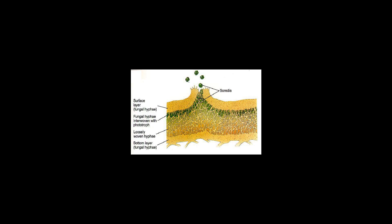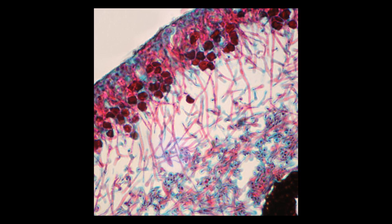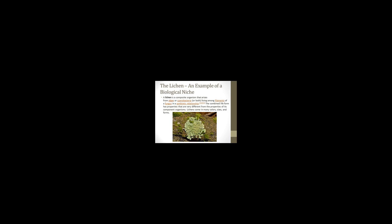The fungal partner protects the alga by retaining water, serving as a larger capture area for mineral nutrients and, in some cases, provides minerals obtained from the substrate. If a cyanobacterium is present as a primary partner or another symbiont in addition to green alga, as in certain tripartite lichens, they can fix atmospheric nitrogen, complementing the activities of the green alga.